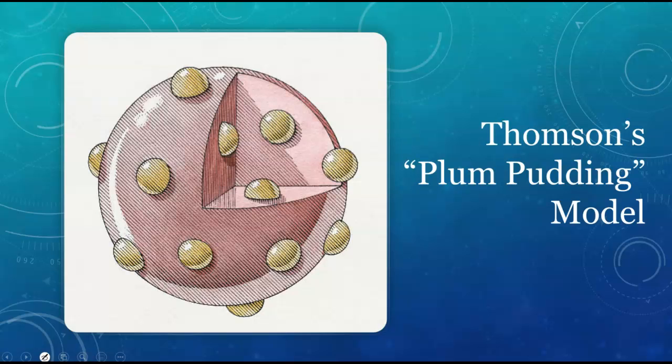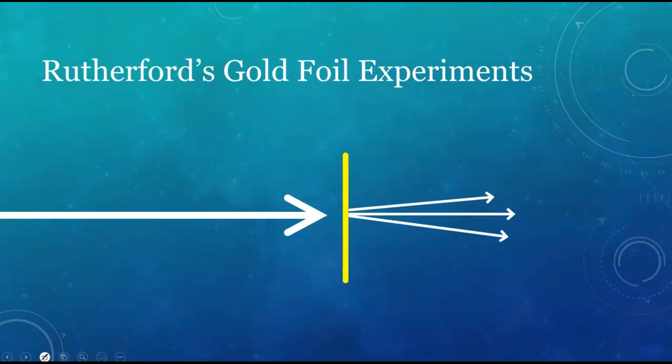The early 1900s were a very productive time for chemists and physicists. Thomson's plum pudding model was the best guess they had about atomic structure for only about five years. Ernest Rutherford was working towards a better understanding of Thomson's positive matter when he arranged an experiment to shoot heavy particles at a thin sheet of gold foil. These particles were much larger than electrons, but still a good deal smaller than the gold atoms. He expected the particles to pass through the foil with only minor deflections, and most of the particles did just that.